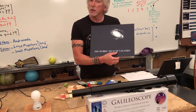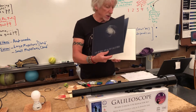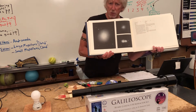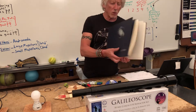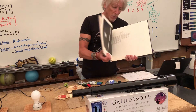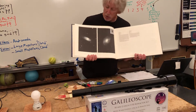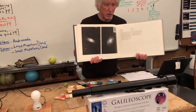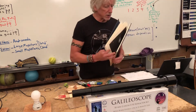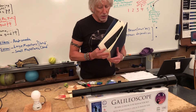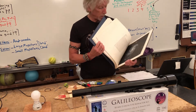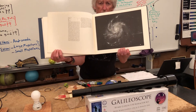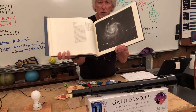This is the Hubble Atlas of Galaxies, published in 1962. You can see various shapes — remember there are about four primary shapes for galaxies.